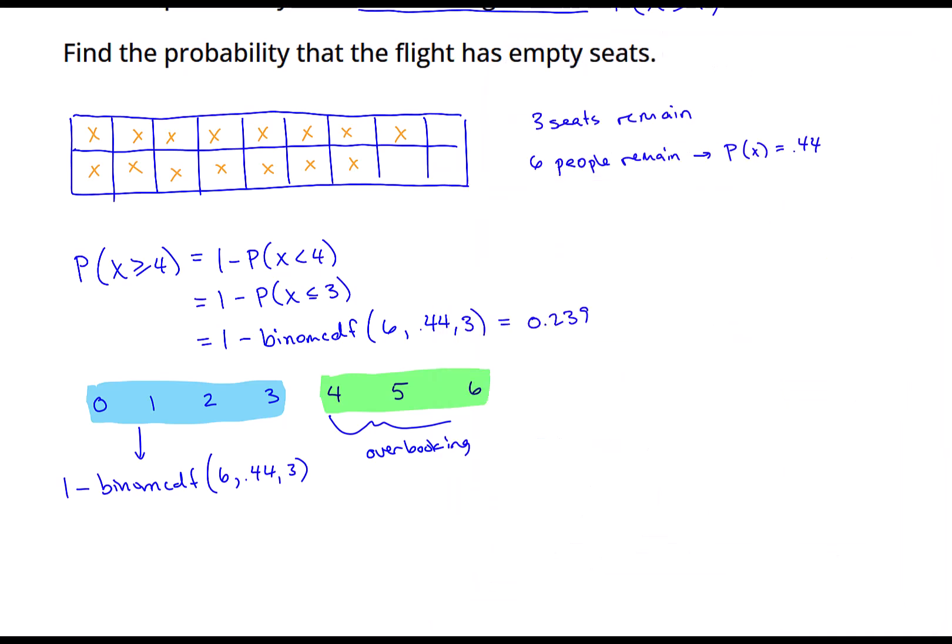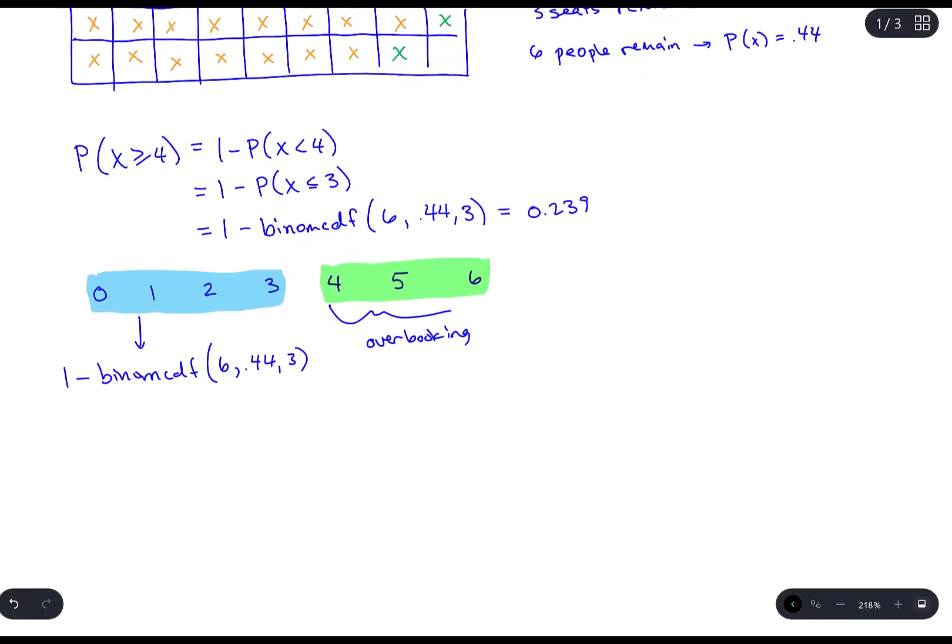Now we have another question asking, what's the probability that the flight has empty seats? For it to have empty seats, it would have to have at least one empty seat. If it is full, that would be a different question. But it's saying it wants empty seats. So it's possible if one person shows up, there would still be empty seats. If two of those six show up, there would still be empty seats. But if the third person shows up, then that's problematic.